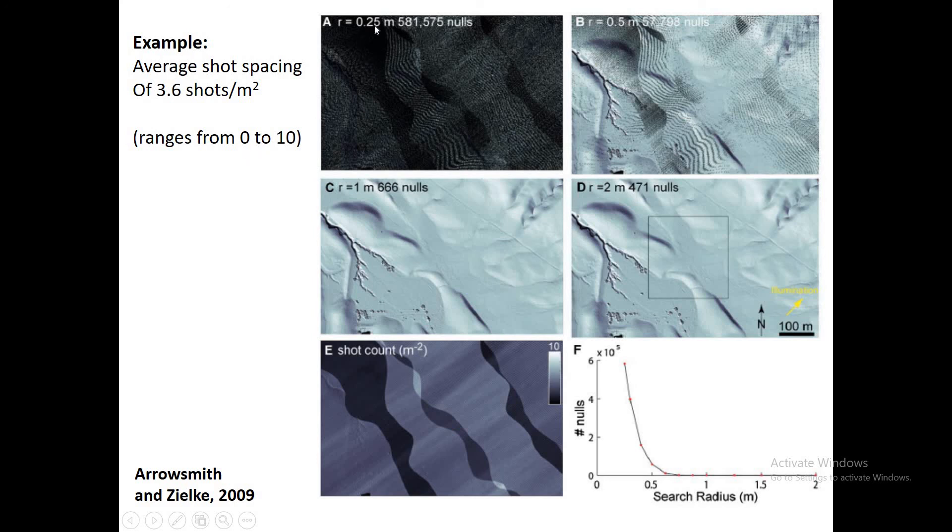Here's what they came up with. If they used a 0.25 meter radius, they got about 600,000 null pixels that were empty, didn't have a shot in them. If they used a half meter radius, they dropped that down by about a factor of 10. In a 1 meter radius, they had almost no null pixels. Just to visualize that, they also produced this map of shot count. You can see, based on the aircraft having flown in this direction, kind of northwest direction, areas where the flight paths overlap a little bit, you get a high density of shots. Areas where the flight paths don't overlap, like in here, you get a low density of shots. In the end, what they show is this really cool plot where it shows how the number of nulls increases as you drop your search radius.